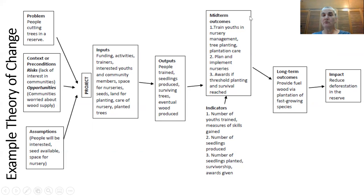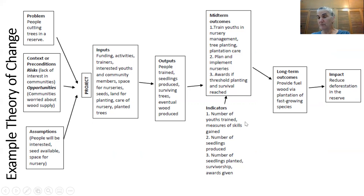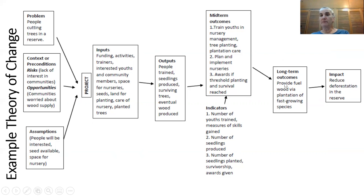Those outputs lead to our outcomes: the youths that have been trained, the nursery that has been implemented, and the awards given out if thresholds have been reached. The indicators would be the number of youth trained and a measure of their skills gained. An indicator for nursery success would be the number of seedlings produced. Indicators for planting and survivorship would be the actual number of seedlings planted and the actual survivorship levels — and if high enough, the success of having given those awards. The long-term outcome would be production of fuel wood from plantations of fast-growing species. And if that continues long enough, the impact would be actually reducing deforestation inside the reserve because of this project.